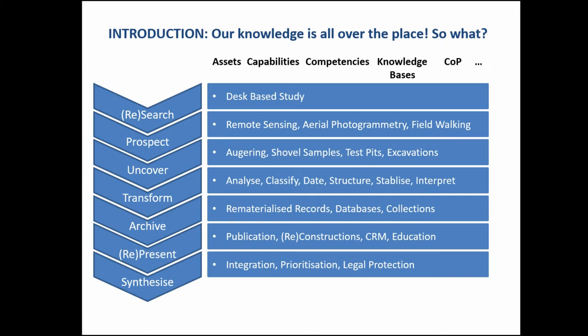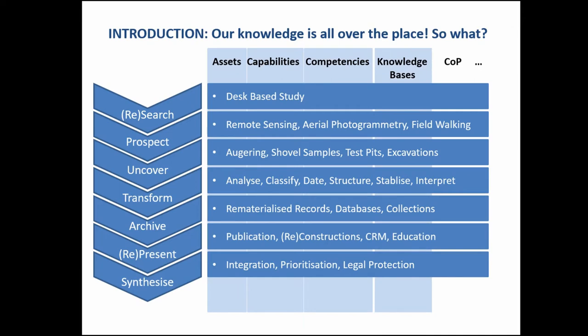I started with this particular one — it's more of a value chain, and it should actually be in a loop with arrows feeding into each other. Basically, I've said there are seven steps of knowledge curation: research, prospect, uncover, transform, archive. The knowledge is spread across assets, capabilities, competencies, knowledge bases — i.e. databases or something like that — and communities of practice.